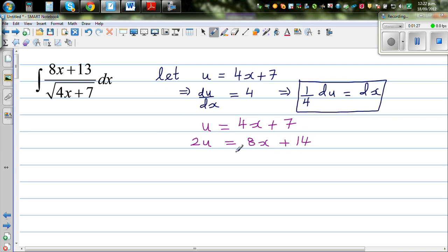But I want 8x plus 13. So I'm going to take away 1 from both sides. So 2u minus 1, 2u minus 1 is 8x plus 14 minus 1. So 2u minus 1 is 8x plus 13.